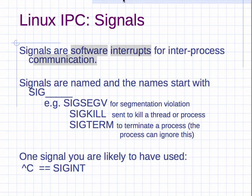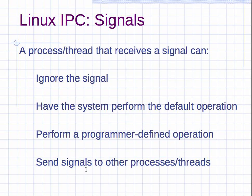Signals are named and there's 64 of them, and they all start with SIG. For example, SIGSEGV for segmentation violation, SIGKILL to kill a thread or a process, SIGTERM to terminate, and so on. One signal you're likely to have seen even if you haven't used kill is Control-C. Control-C is the same as SIGINT or interrupt.